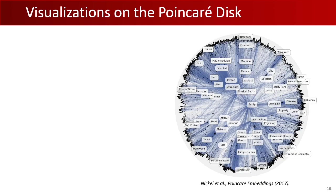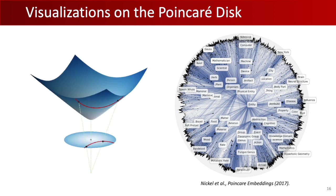Once we have learned embeddings, we can use them for downstream prediction tasks and also to visualize hierarchical data. The Poincaré model of hyperbolic space is particularly useful in two dimensions because all points can be visualized on a disk. Being close to the origin corresponds to being higher in the hierarchy. We can map points from the hyperboloid model onto the Poincaré disk using stereographic projection. The embeddings learned by Nickel's model capture the hierarchy in the data quite well — for example, hyperbolic geometry is lower in the hierarchy than mathematics, which is itself lower than science.